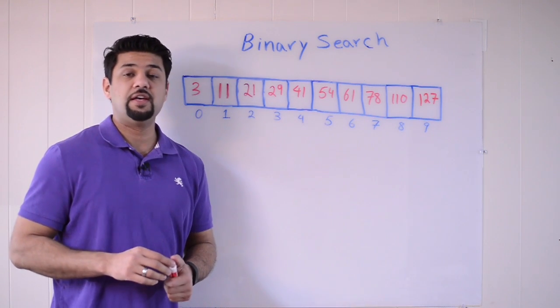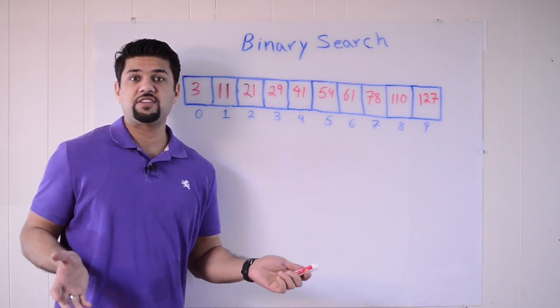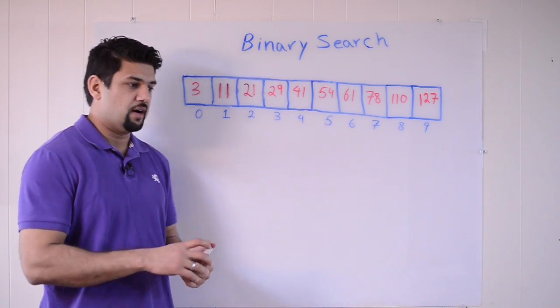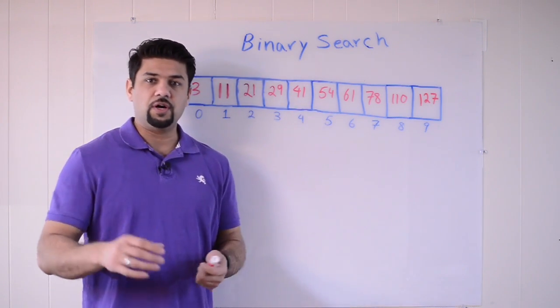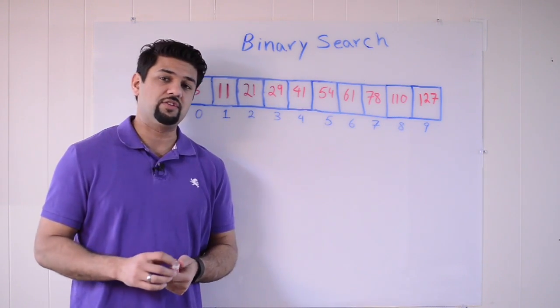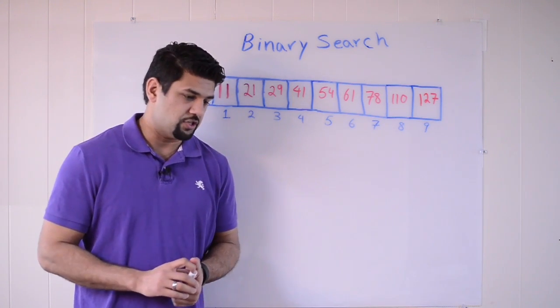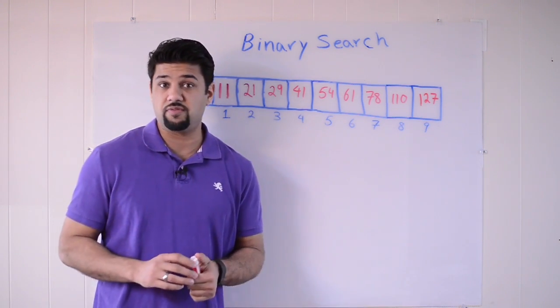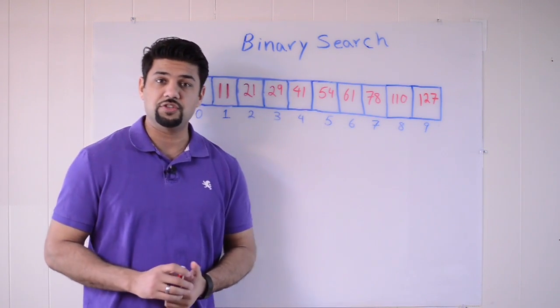Binary search is one of the most popular algorithms in computer science, and rightfully so. It's actually one of the fastest approaches that we have for searching through a list of things. There's a famous book, it's a classic, I recommend you read it, it's called Programming Pearls. And in there, the author John Bentley mentions that only 10% of professional programmers are able to implement binary search in an interview.